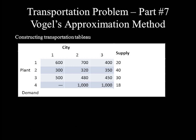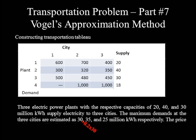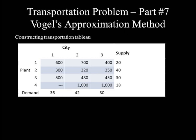Demand of each city is expressed at the bottom margin of the table, reflecting the increased demand (original plus 20%). Demand of C1 = 30 + 0.2 × 30 = 36 million kWh. Demand of C2 = 35 + 0.2 × 35 = 42 million kWh. Demand of C3 = 25 + 0.2 × 25 = 30 million kWh. This is a complete transportation table, and it is balanced because total supply equals total demand.